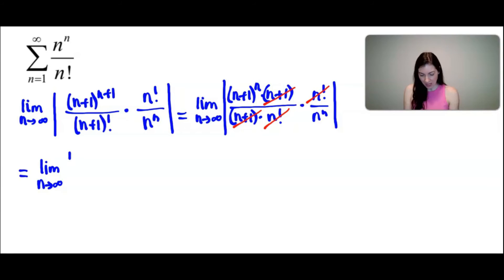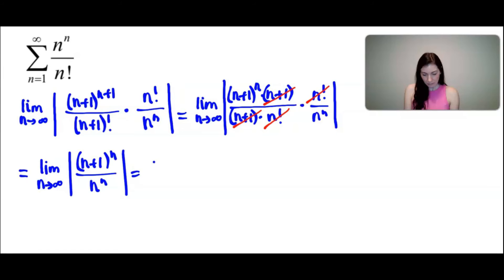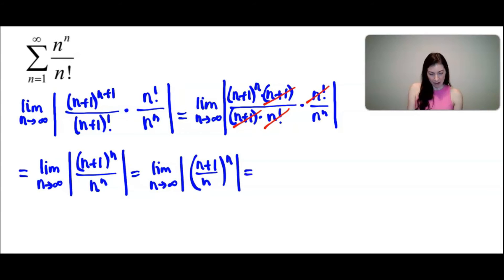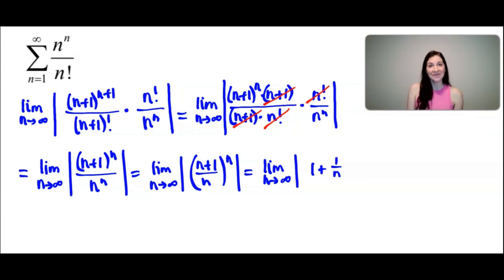We're left with the limit as n approaches infinity of the absolute value of (n+1)^n over n^n. I can rewrite this as [(n+1)/n]^n, and then split everything over that denominator to get [1 + 1/n]^n, inside the absolute value.